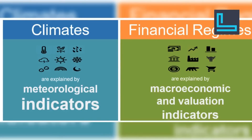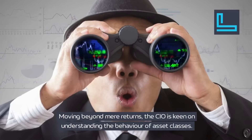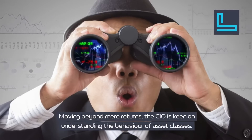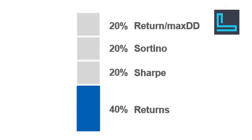Just as climates are determined by meteorological indicators, financial regimes are shaped by valuations and macroeconomic cycles. Moving beyond mere returns, the CIO is keen on understanding the behavior of asset classes. Like fund pickers who use various metrics to characterize a fund's behavior, we consider not only returns, but also assess returns relative to factors like max drawdown, downside risk (denominator of the Sortino ratio), and volatility (denominator of the Sharpe ratio).